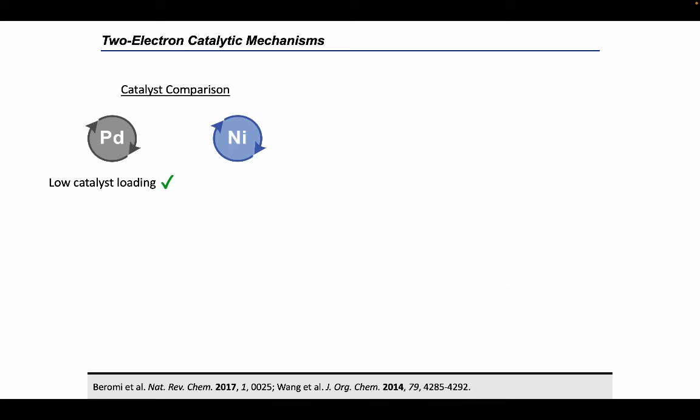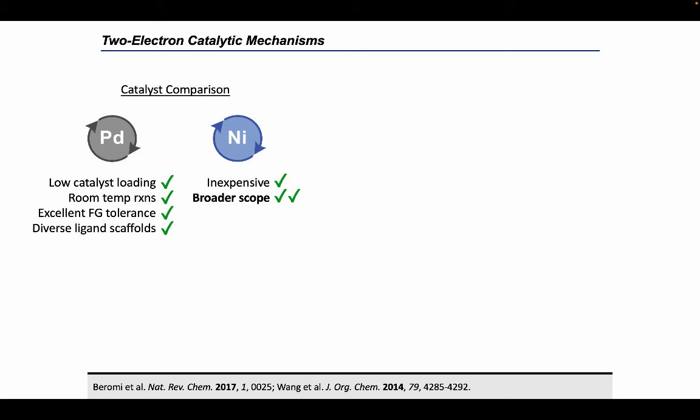Comparatively, palladium cross-couplings can be run at low catalyst loadings, more moderate temperatures, display excellent functional group tolerance, and given their extensive study, there's an amazing diversity of ligand scaffolds available. However, nickel is much more earth-abundant and orders of magnitude less expensive than palladium. And perhaps most importantly, nickel offers a broader scope of accessible coupling partners. Recall that nickel has a faster rate of oxidative addition than palladium due to its lower electronegativity, resulting in a wide range of functional groups that can be activated for cross-coupling by nickel.